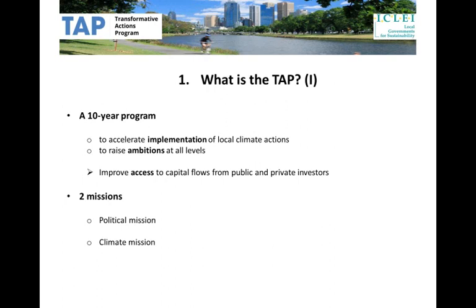The TAP is a response to previous attempts by local and sub-national governments to push for a 10-year action program to be adopted within the UNFCCC framework. This proposal was put forward in the framework of the Local Government Climate Roadmap in 2013. Following up on this effort, ICLEI and partners have now launched the TAP outside of the UNFCCC process, while hoping that at some point in the future it will feed into this process.